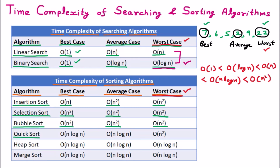Coming to quick sort: it takes O(n log n) for best case and average case, but in the worst case it takes O(n²). O(n²) can be understood as applying two nested for loops. For heap sort, it takes O(n log n) for best case, average case, and worst case. Similarly, merge sort takes O(n log n) for best case, average case, and worst case. If somebody asks which is the best sorting algorithm, based on complexity we can see that heap sort and merge sort are the best because they take less time in all cases.